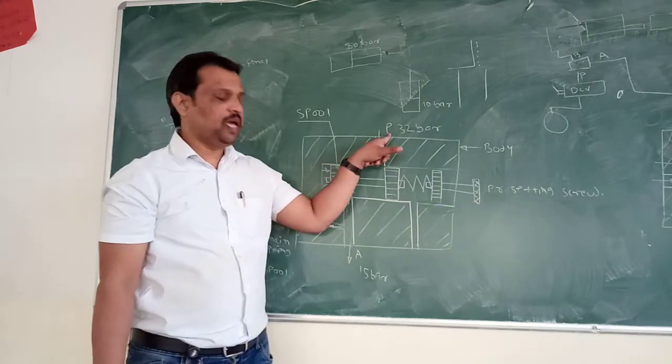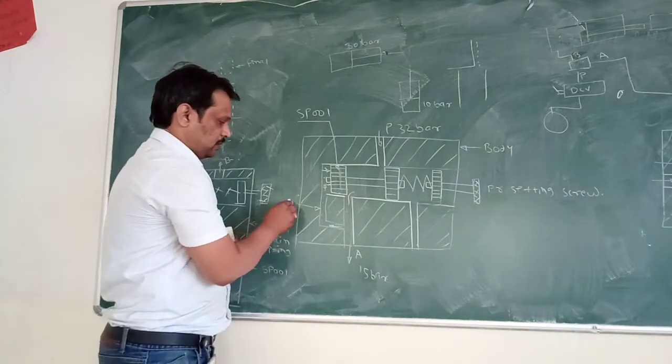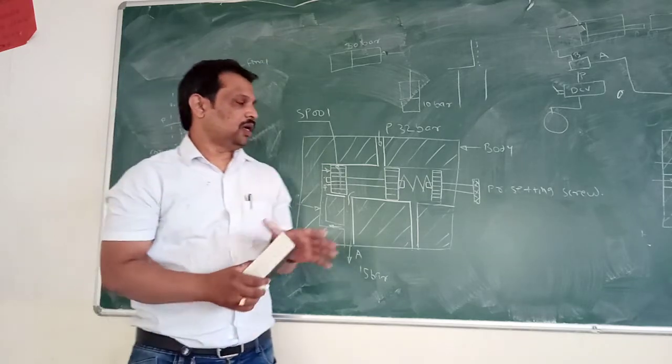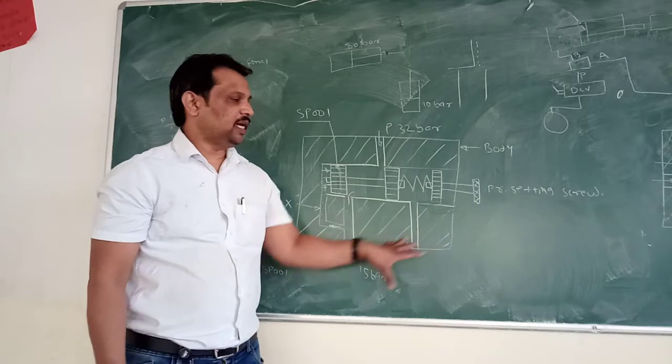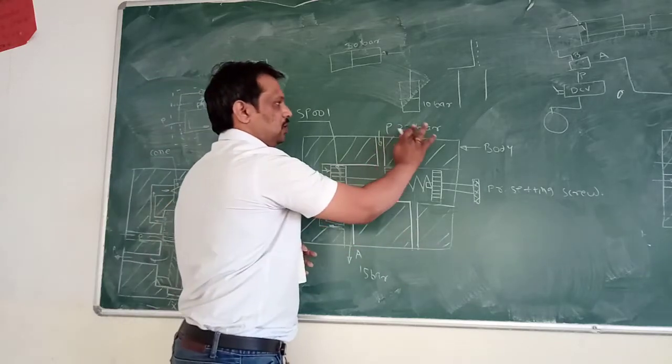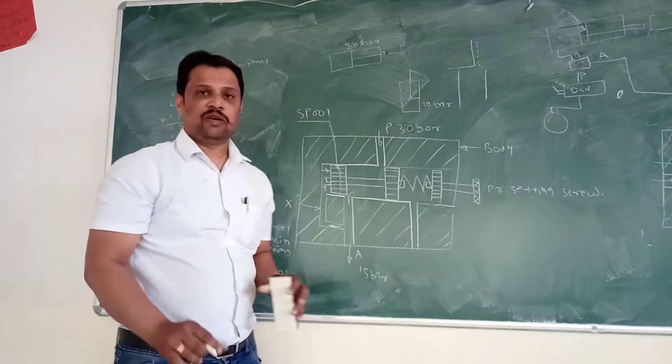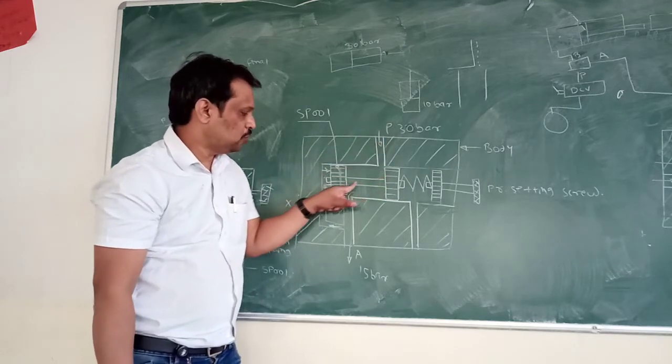There is pressure port P, another port A, and this is the passage X. Now consider the first case that you have set this valve for 30 bar pressure and your output pressure is 15 bar.